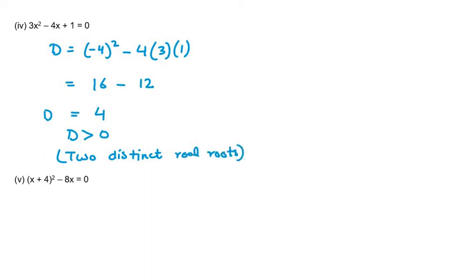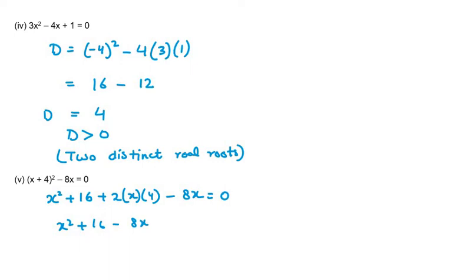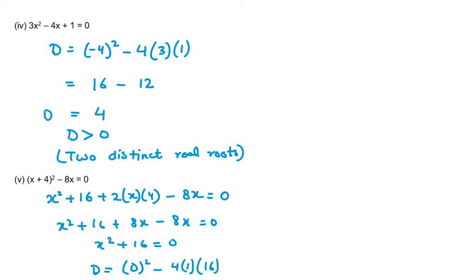The fifth part is (x + 4) squared minus 8x equals 0. We expand to get x squared plus 16 plus 8x minus 8x equals 0. The 8x terms cancel out, leaving x squared plus 16 equals 0. Now b is missing, so b is 0. D equals 0 squared minus 4 times 1 times 16, which gives minus 64. Since D is less than 0, the equation has no real roots.